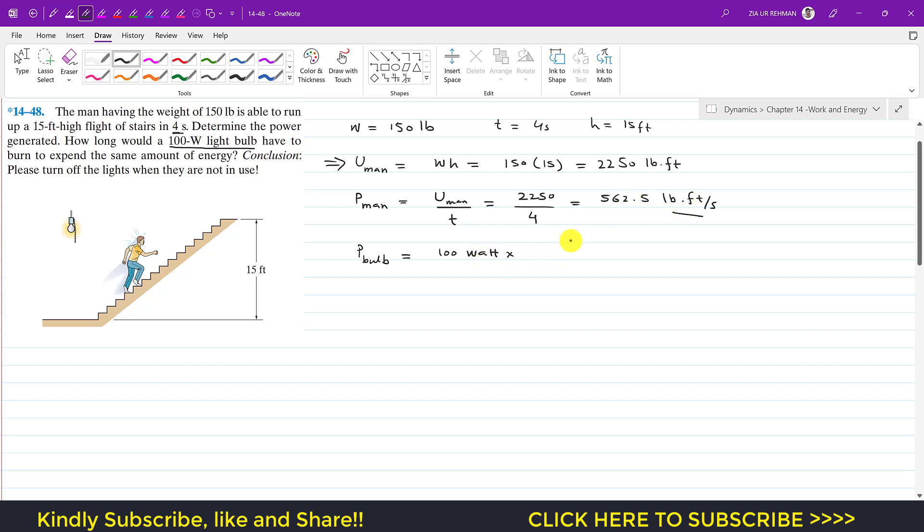As we know that one horsepower is equal to 746 watts, and we also know that one horsepower is equal to 550 pound-feet per second. So horsepower will cancel out and watts will cancel out, so we will be left with pound-feet per second which we want to have.